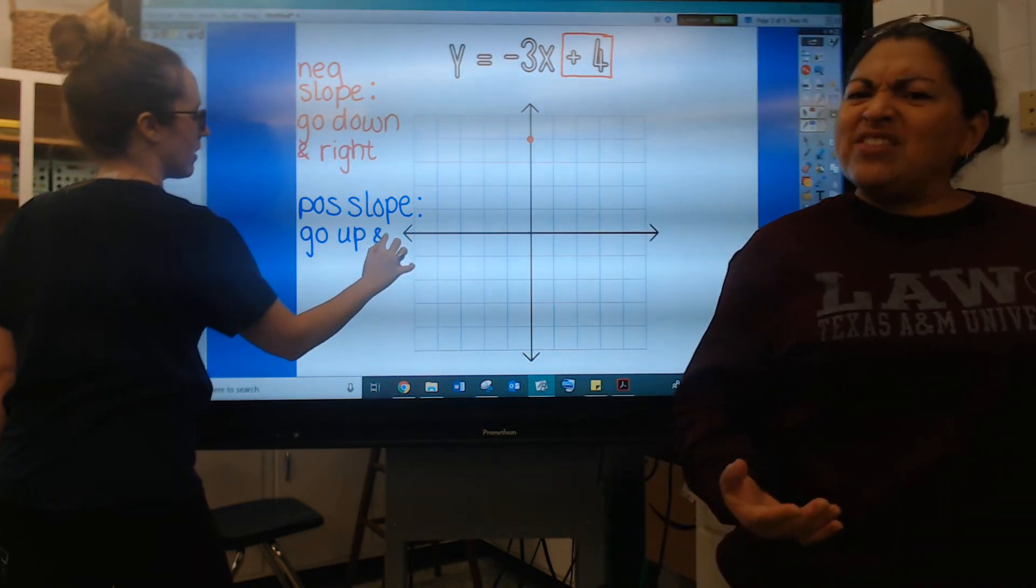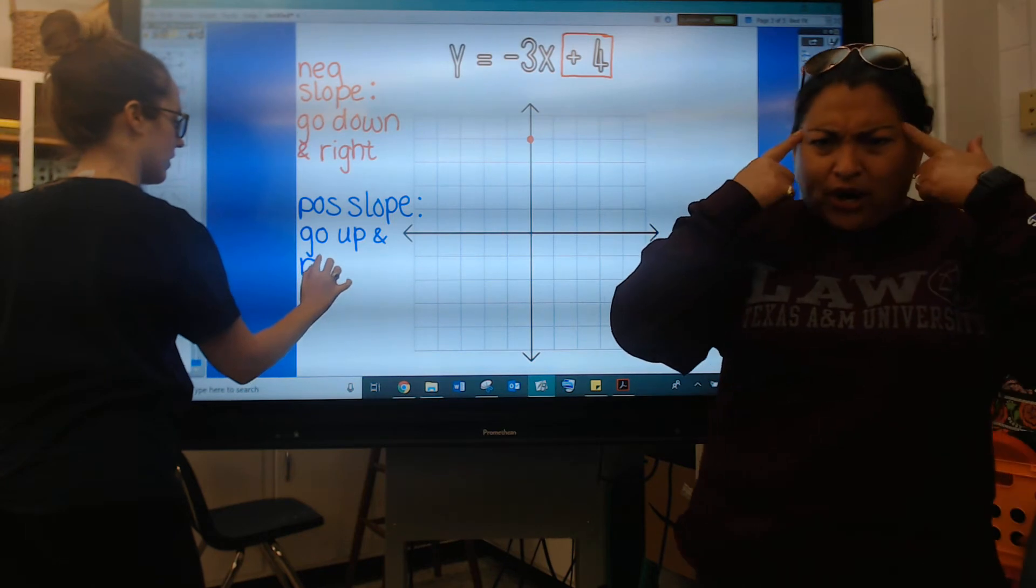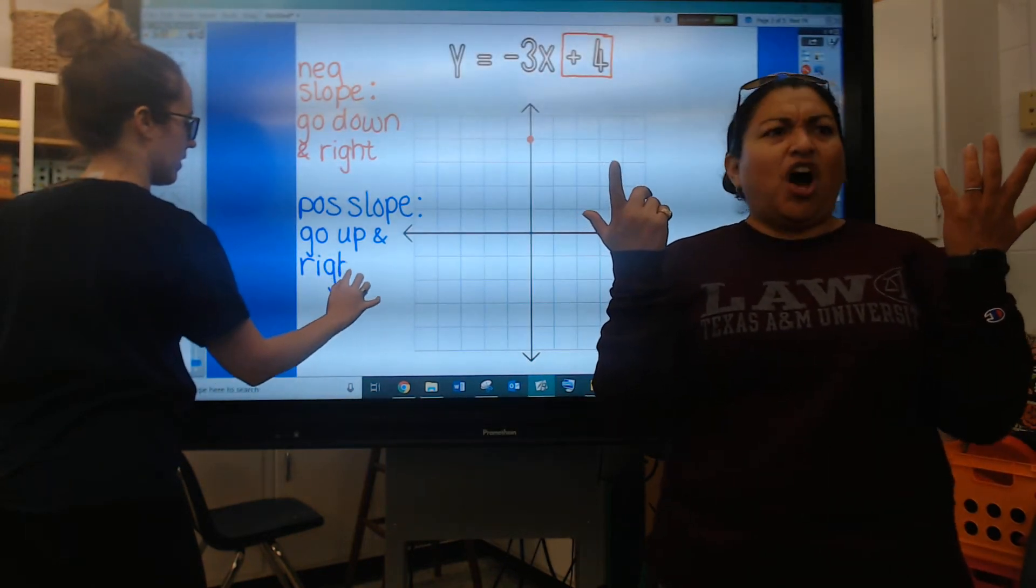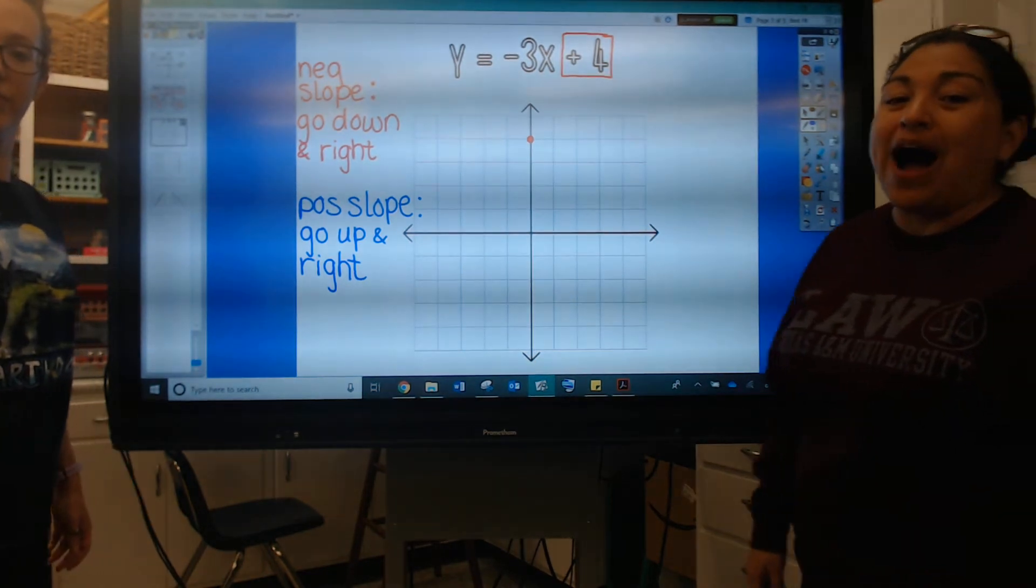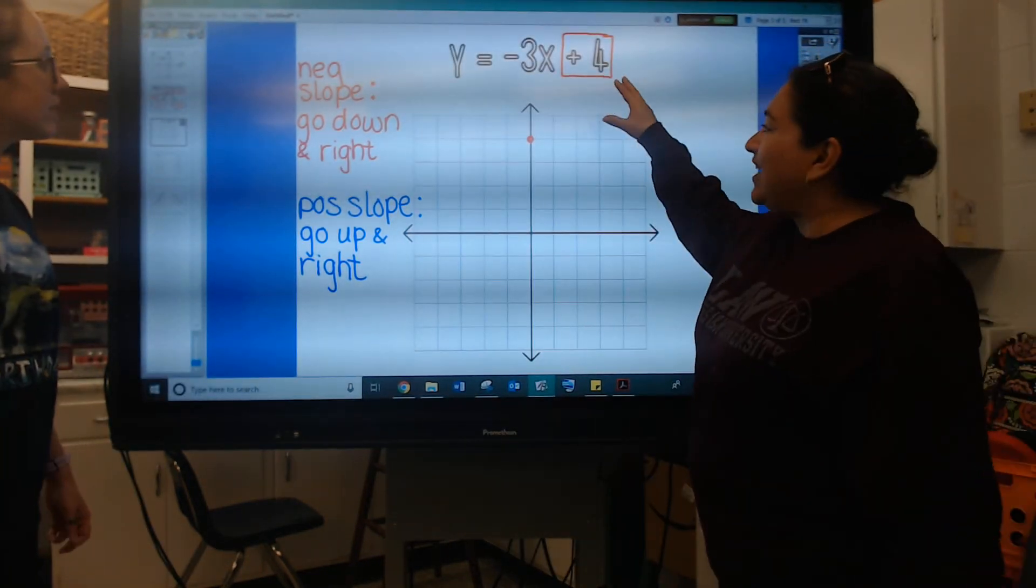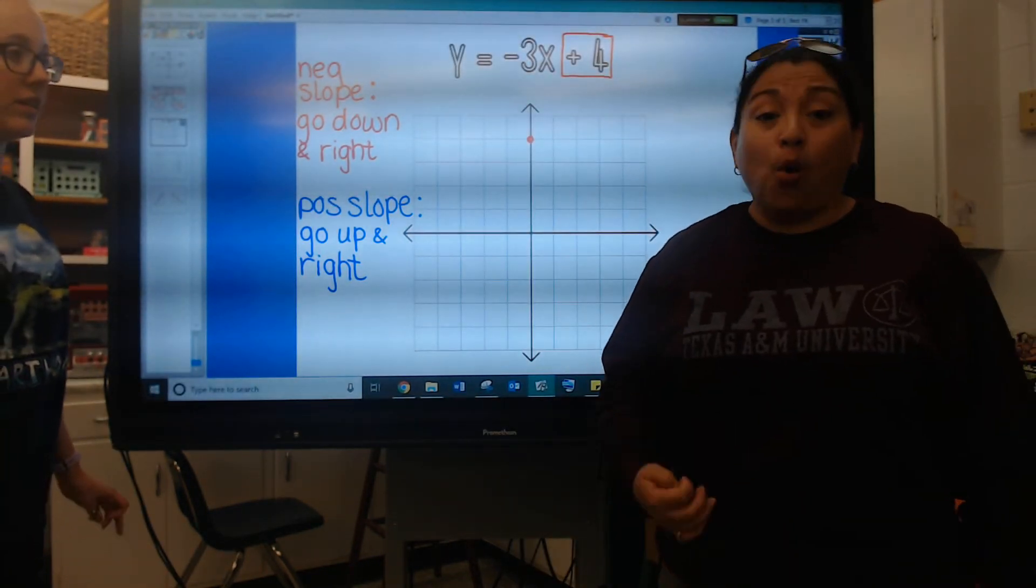Okay I think something that I left out is where do you start counting Mrs. Voss? Well you start counting at the y-intercept. Whatever that is that's your starting point.